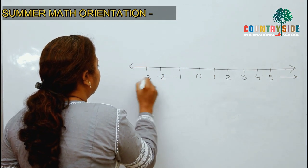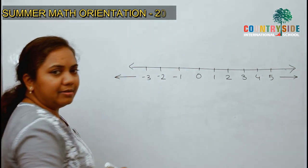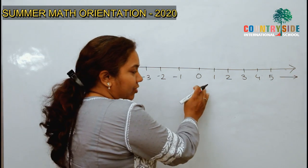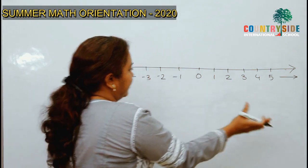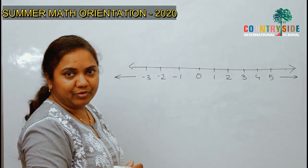So, is this right? This is a number line? Yes. It has 0, it has some positive numbers and it has some negative numbers.